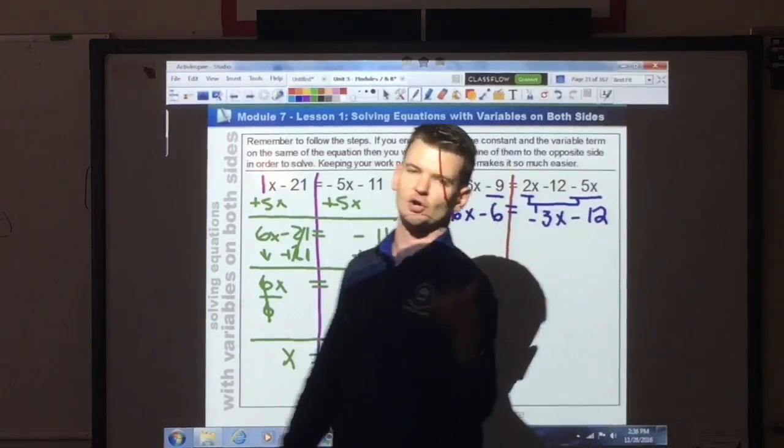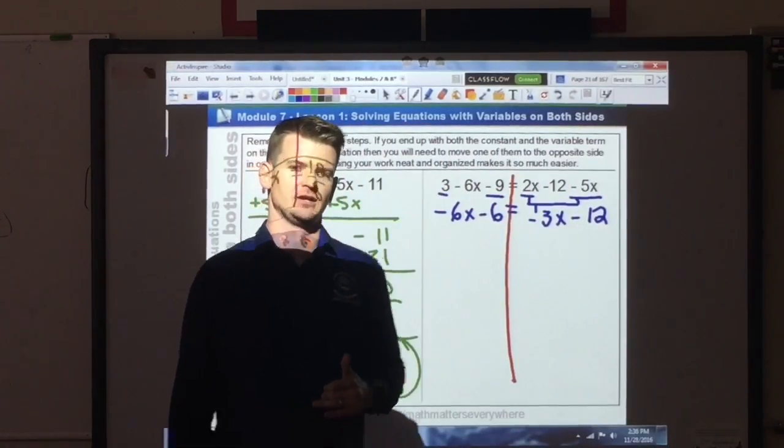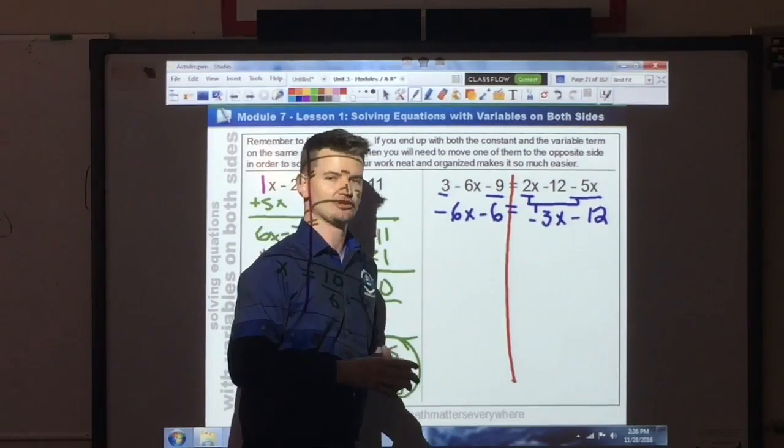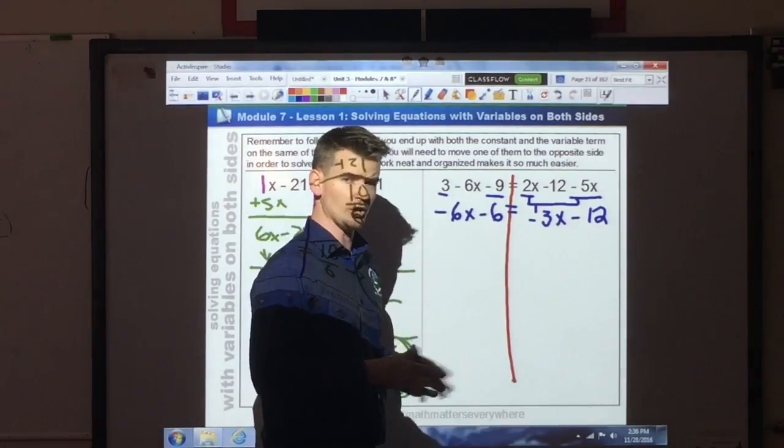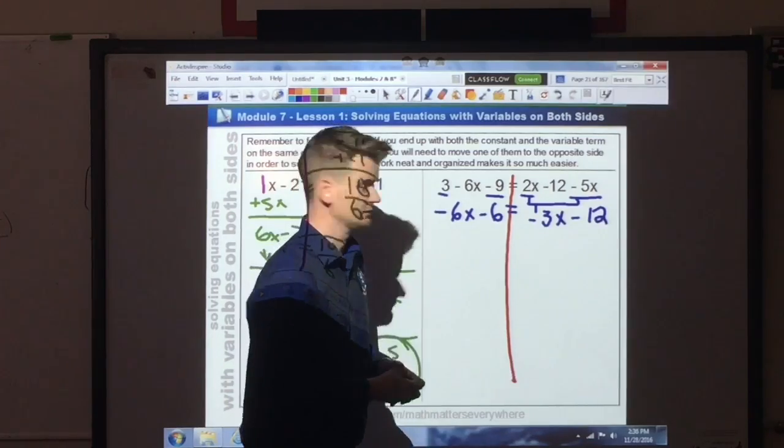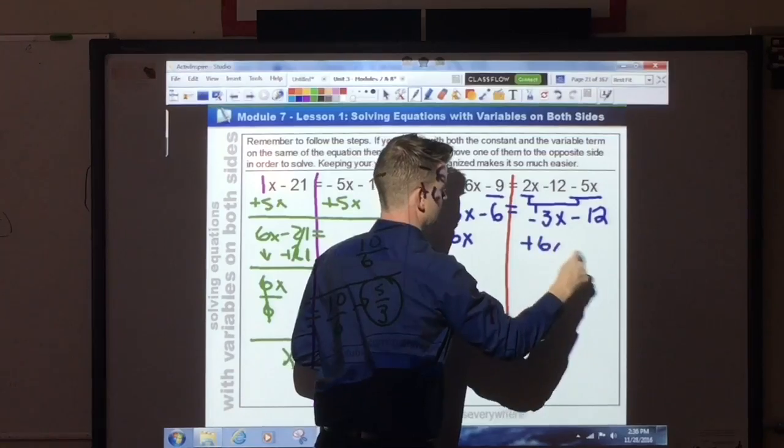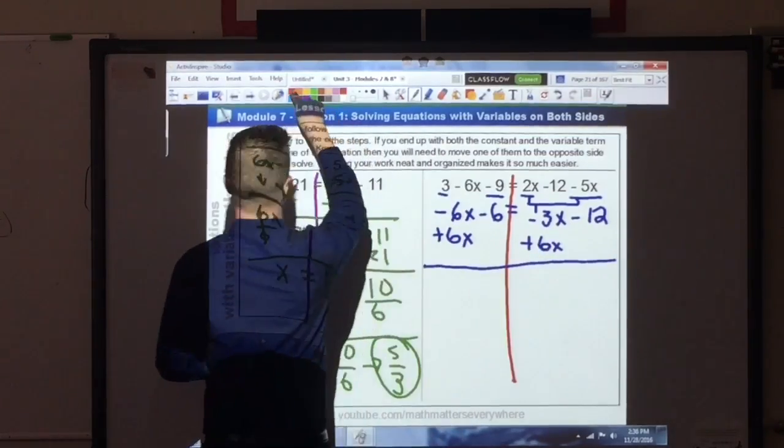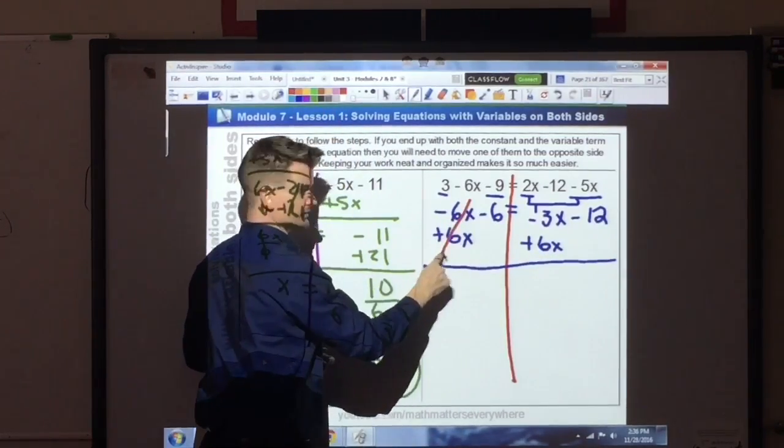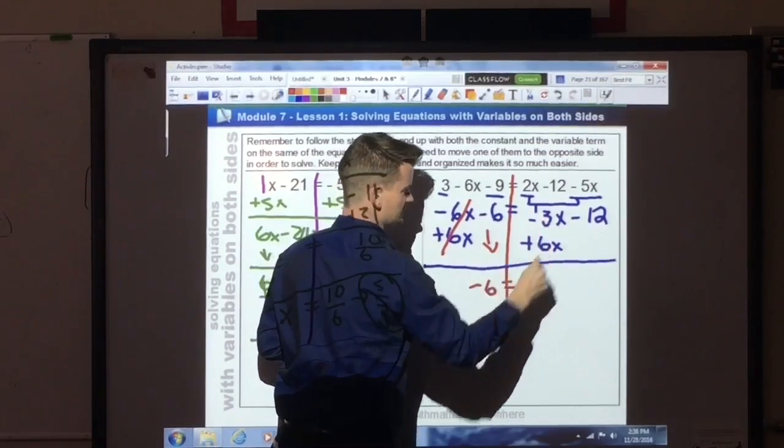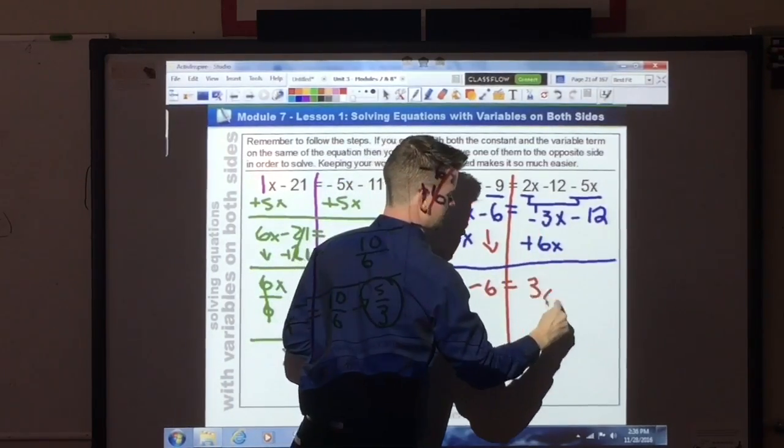And now I can go and try to solve this equation. I look at my coefficients. A negative 6 and a negative 3. Which one is smaller? Negative 6. So what I'm going to do is I'm going to add 6x to both sides. That will cancel out these 6x's. I bring this down. It gives me negative 6. Negative 3x plus 6x gives me 3x minus 12.